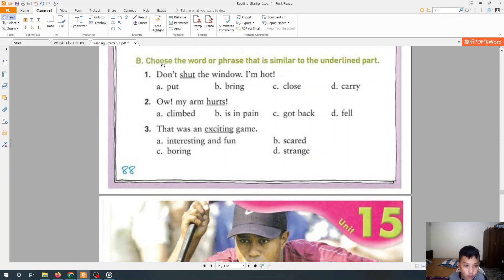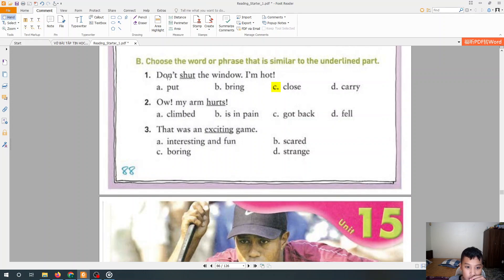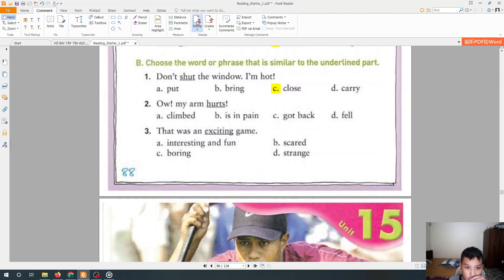We go to part B. Choose the best word or phrase that is similar to the underlined part. First word is shut. It is the same as close. This sentence. Don't shut the window, I'm hot.